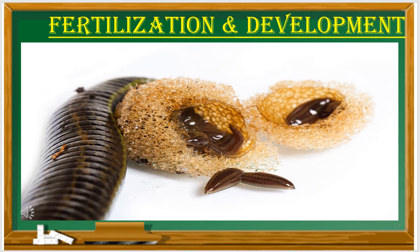Next is fertilization and development. Fertilization is the union of the male and female gametes. The male gamete is the spermatozoon and the female gamete is the egg. Both gametes fuse inside the female body, so this fertilization is called internal fertilization.